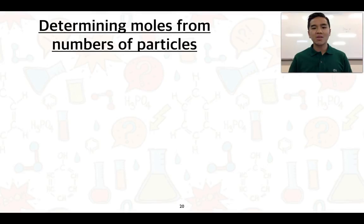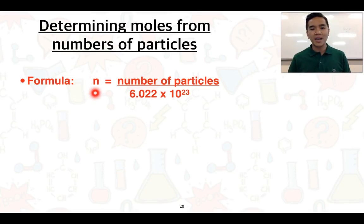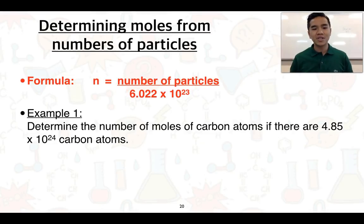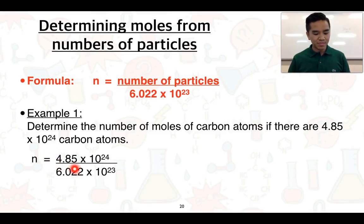Applying the concept of the mole, we get a similar formula. Instead of dozens, we're talking about moles, so the number of moles of a substance — represented by n — equals the total number of particles divided by the total number of particles in one mole. Our first example is determining the number of moles of carbon atoms if there are 4.85 times 10 to the 24 of them. We substitute our numbers in: the number of moles equals that total divided by Avogadro's number.